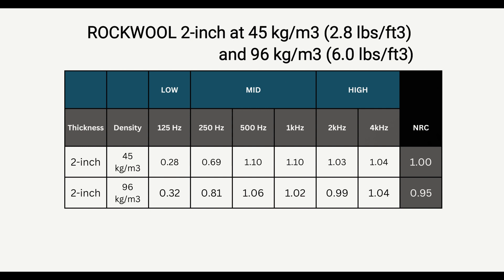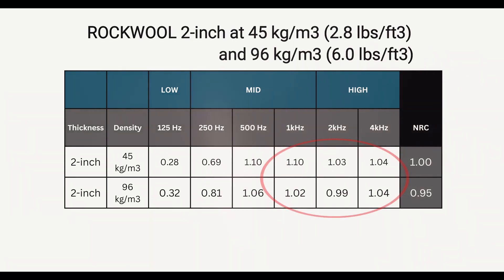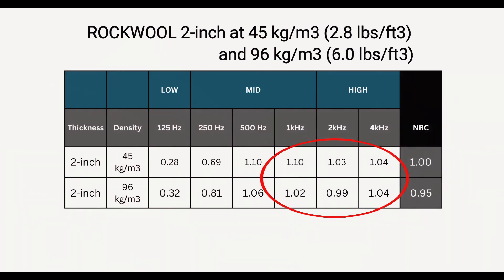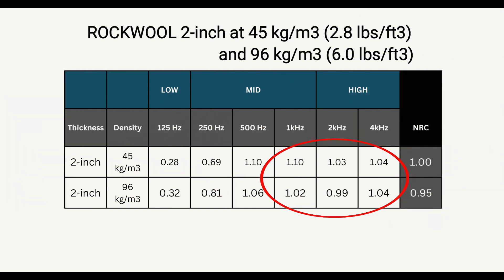The difference in density will cause a variation in absorption rate at certain frequencies, especially at high frequencies. The higher the density of a material, the more likely the material becomes rigid. The more rigid the material is on the surface, the more it's able to reflect higher frequencies, leading to declined absorption rates at the top ends.